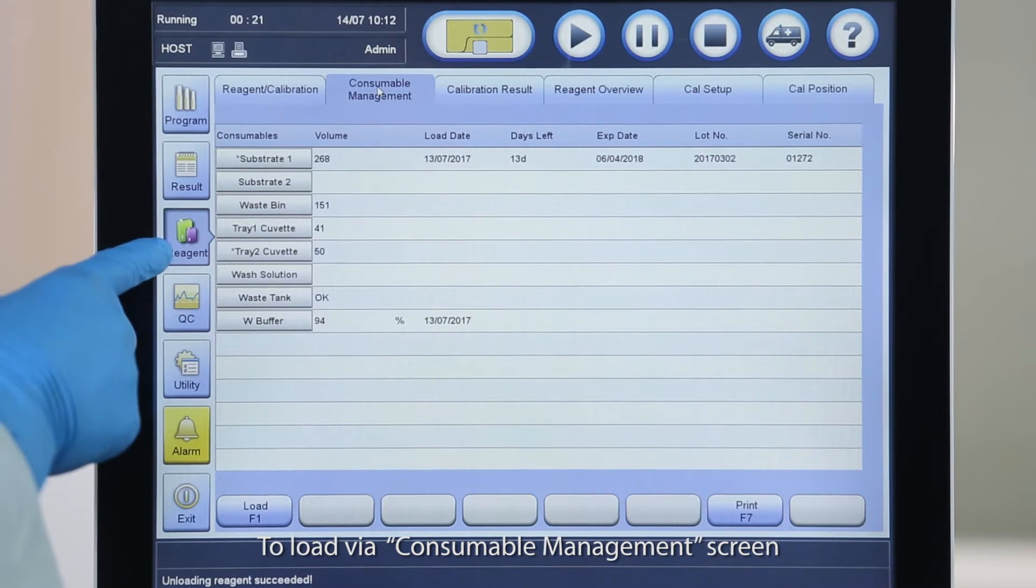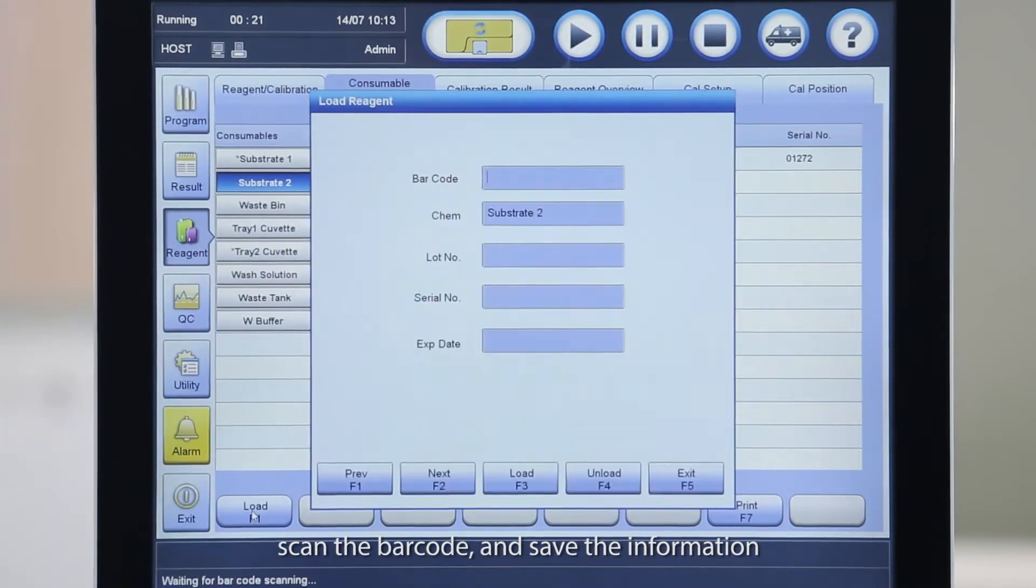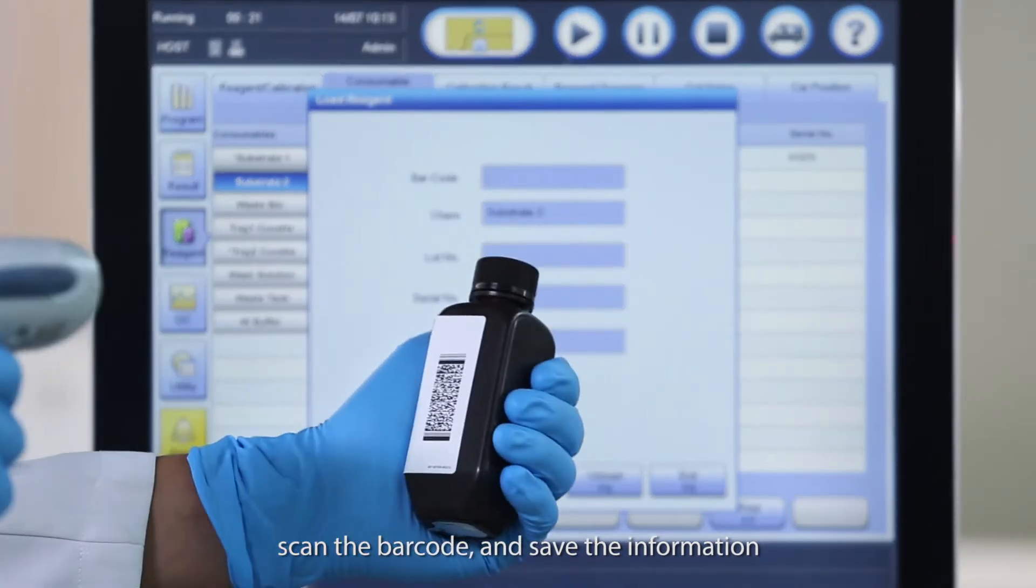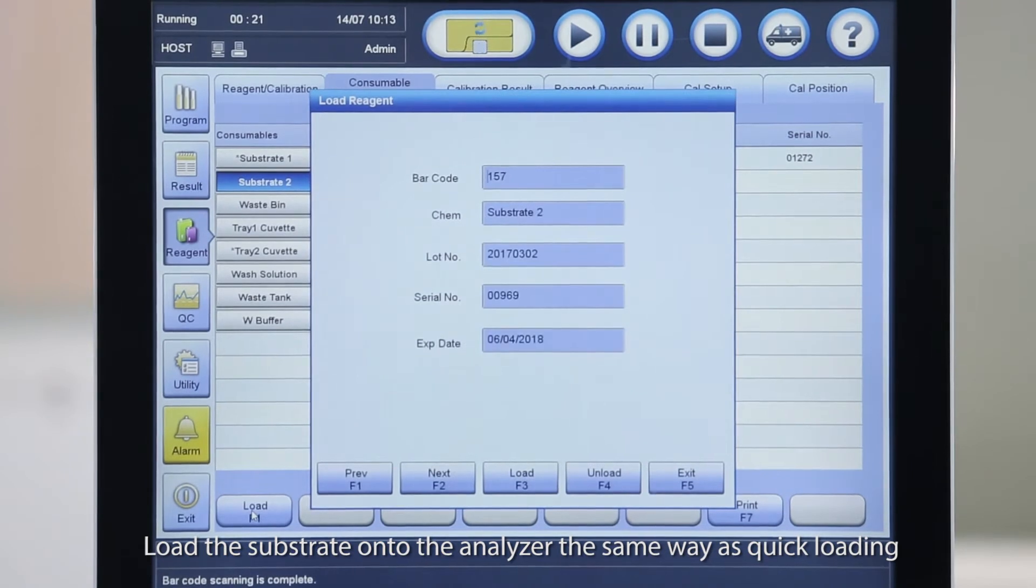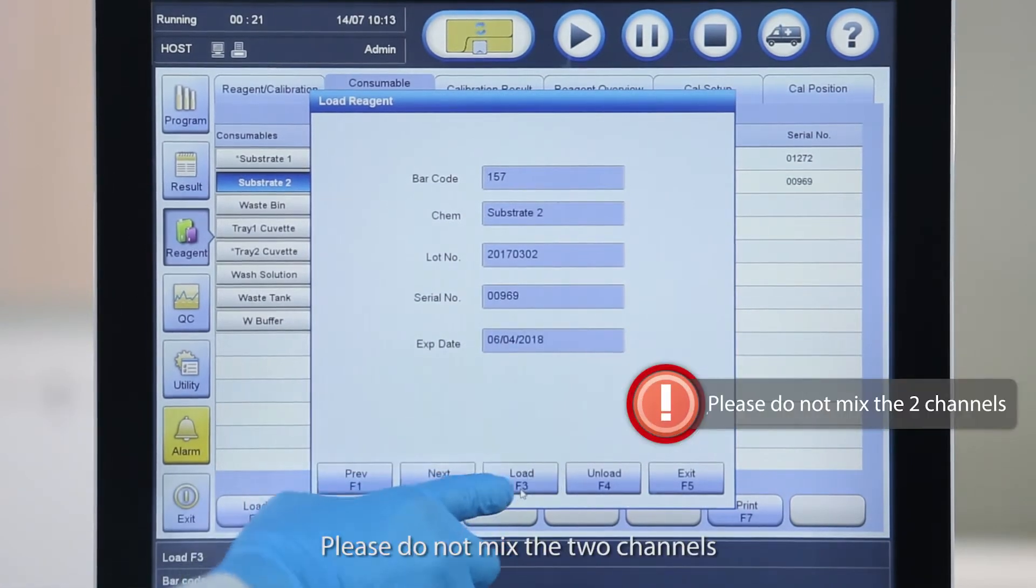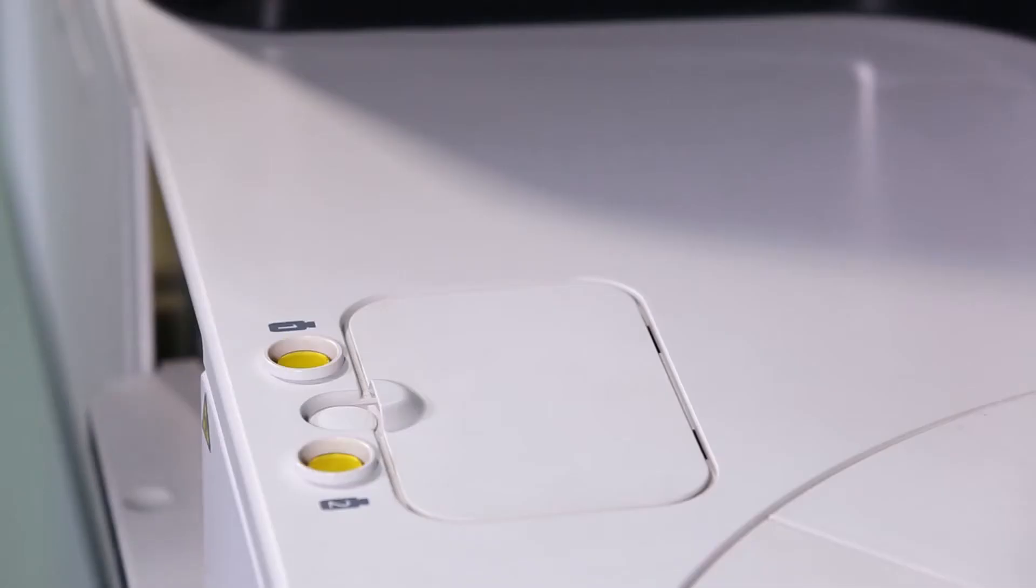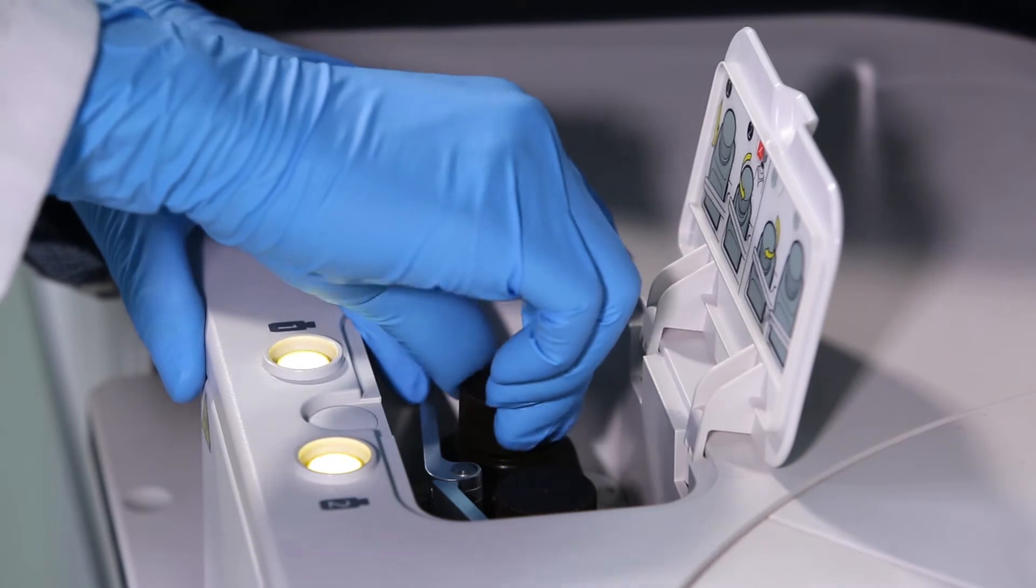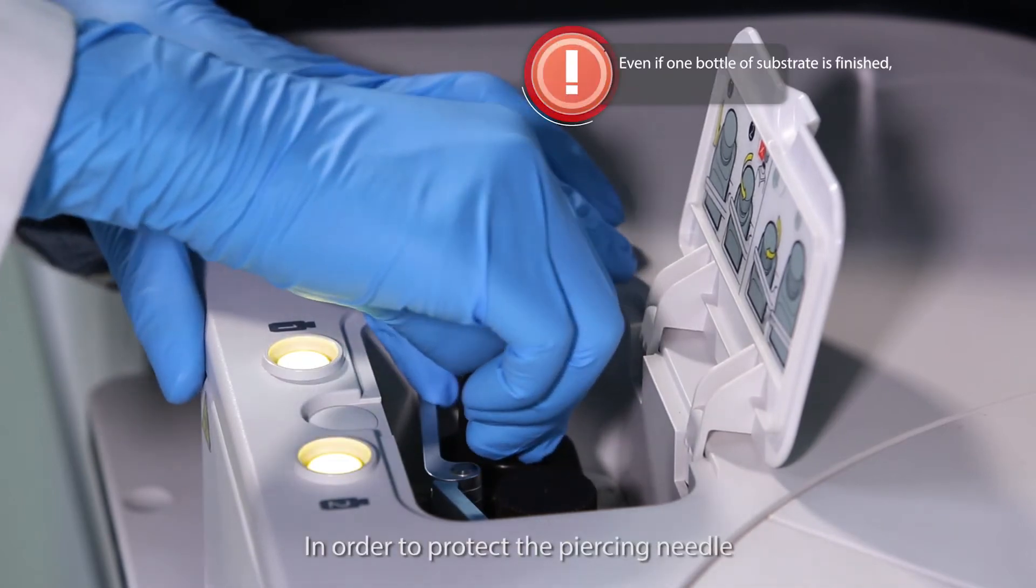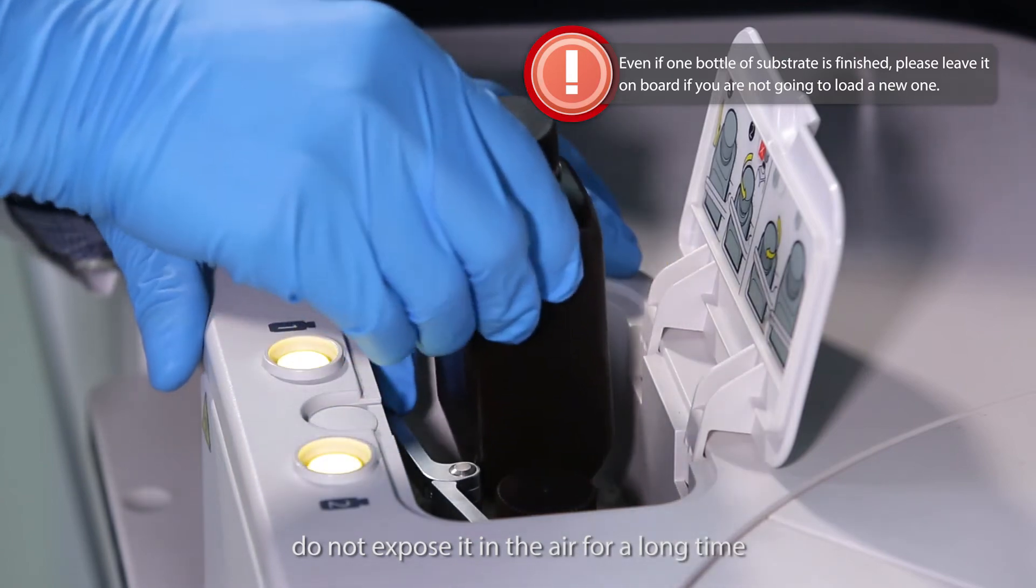To load via consumable management screen, click the available substrate channel. Scan the barcode and save the information. Load the substrate onto the analyzer the same way as quick loading. Please do not mix the two channels. To unload, tightly close the cap and take the bottle out. Load the water. In order to protect the piercing needle, do not expose it in the air for a long time.